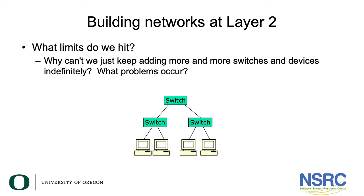What is it that stops you building a layer two network as big as you like? Why could we not, for example, build the entire internet across the world as just a big layer two switch network where everybody has a switch and they just plug it into the next switch along? Well, there are a number of reasons for this.